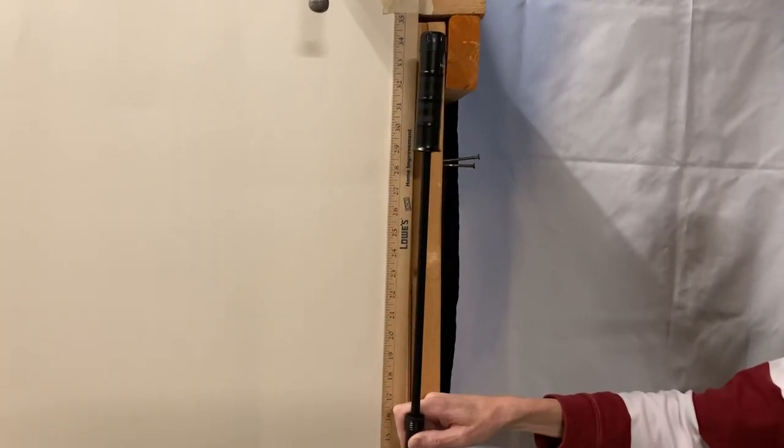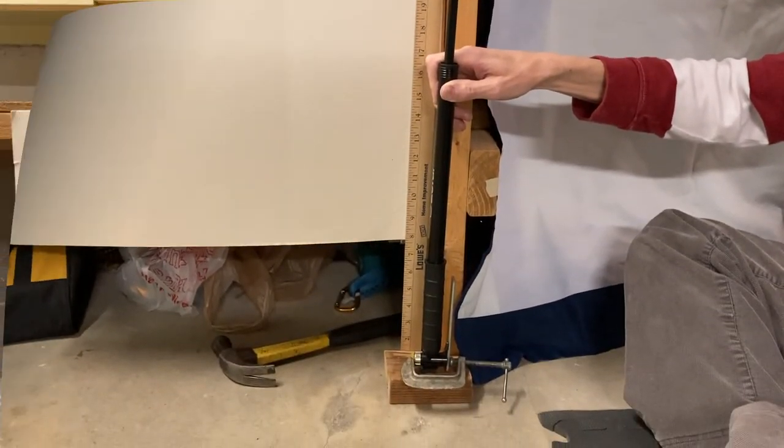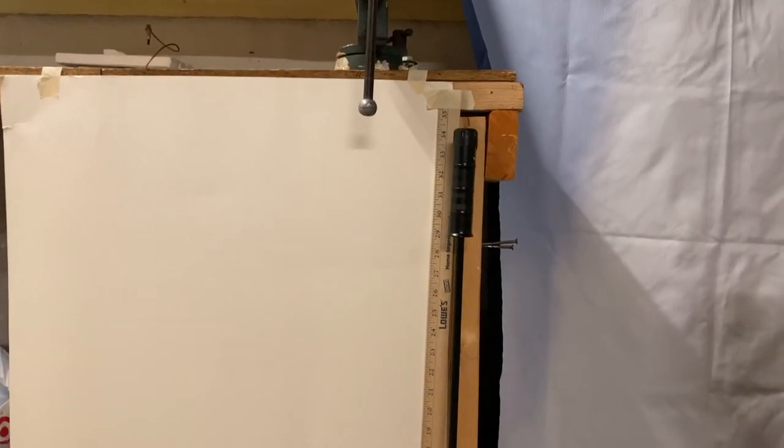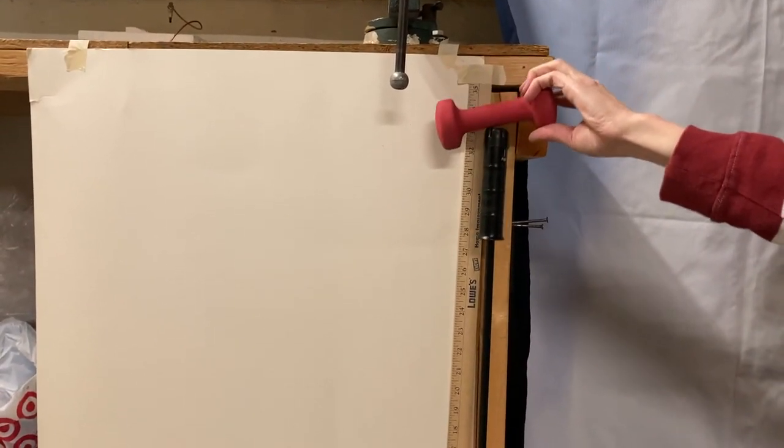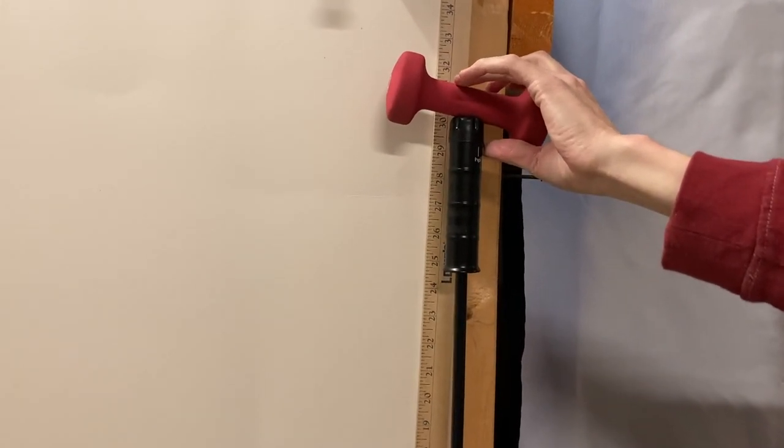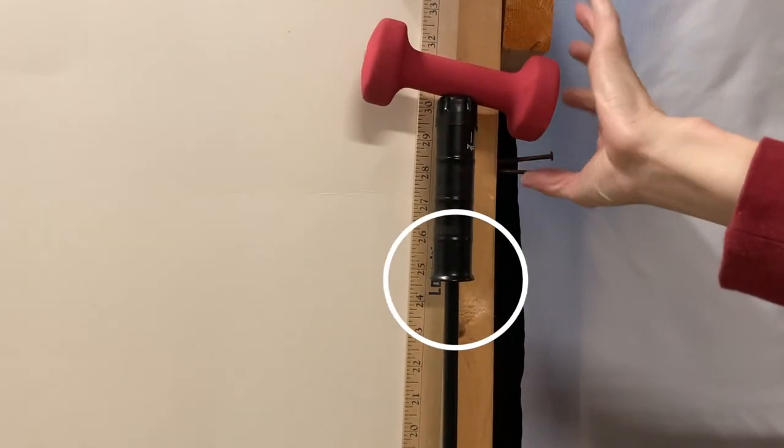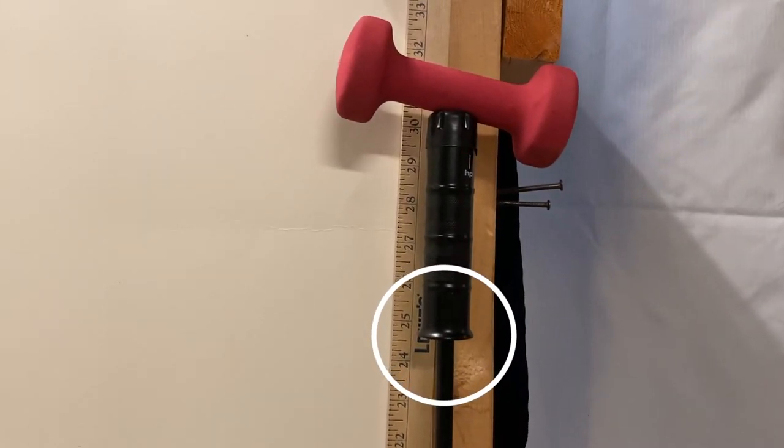Then, you're going to pull the handle back up as far as it can go and plug the end. Now, you're just going to place weights on top of the pump handle just like we did with the syringe. Once the weight is balanced, record the height of the handle. We recorded height from the bottom of our handle. You can pick wherever on the handle you want. Just make sure you keep it consistent.